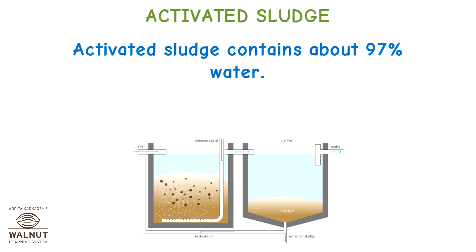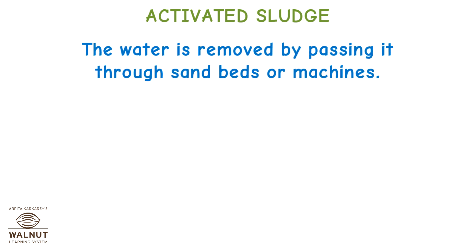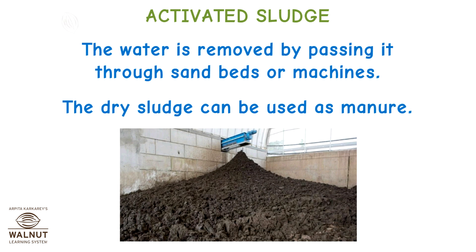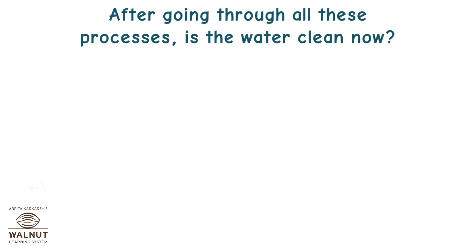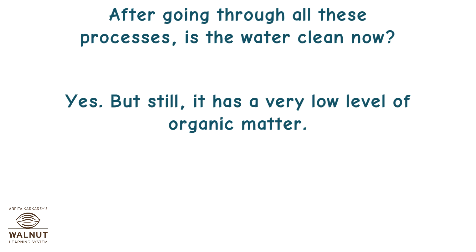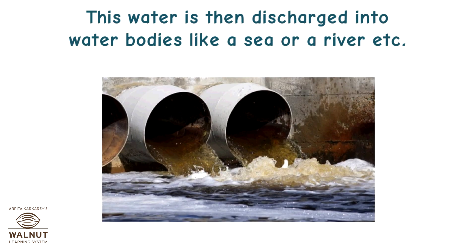This settled material is called activated sludge, which contains about 97% water. The water is removed by passing it through sand beds or machines, and the dry sludge can be used as manure. After going through all these processes, the water still has a very low level of organic matter, and is then discharged into water bodies like a sea or a river.